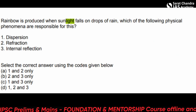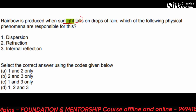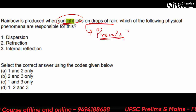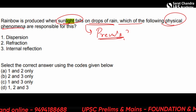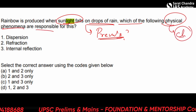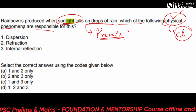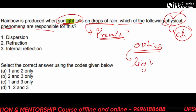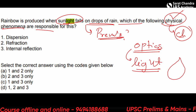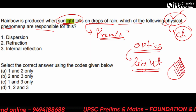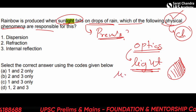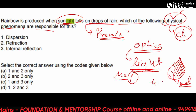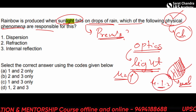These questions are from UPSC prelims only. The next question: 'A rainbow is produced when sunlight falls on drops of rain. Which of the following physical phenomena are responsible?' This is about optics — light falling on a water droplet. If the refractive index of water is different from that of the atmosphere (which is 1), the light changes medium and refraction occurs.